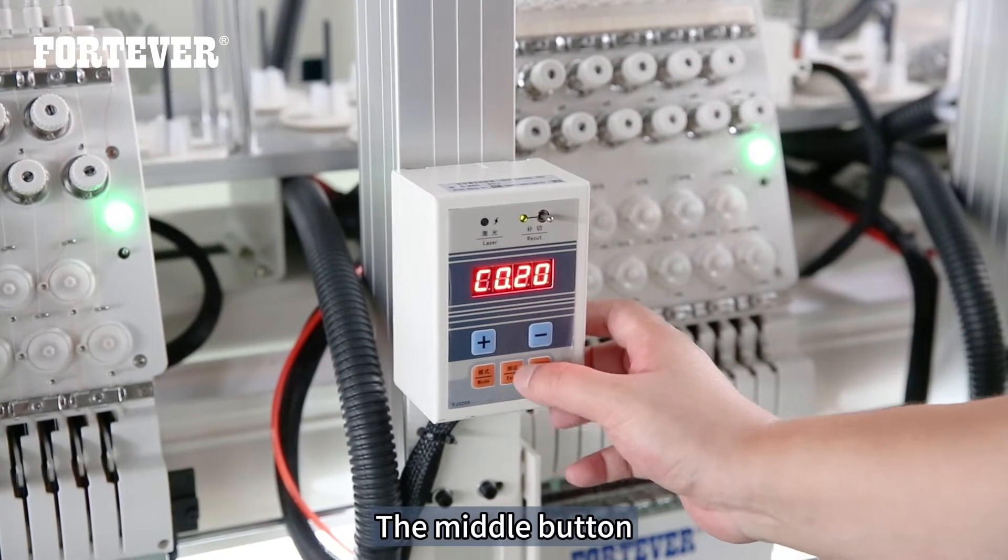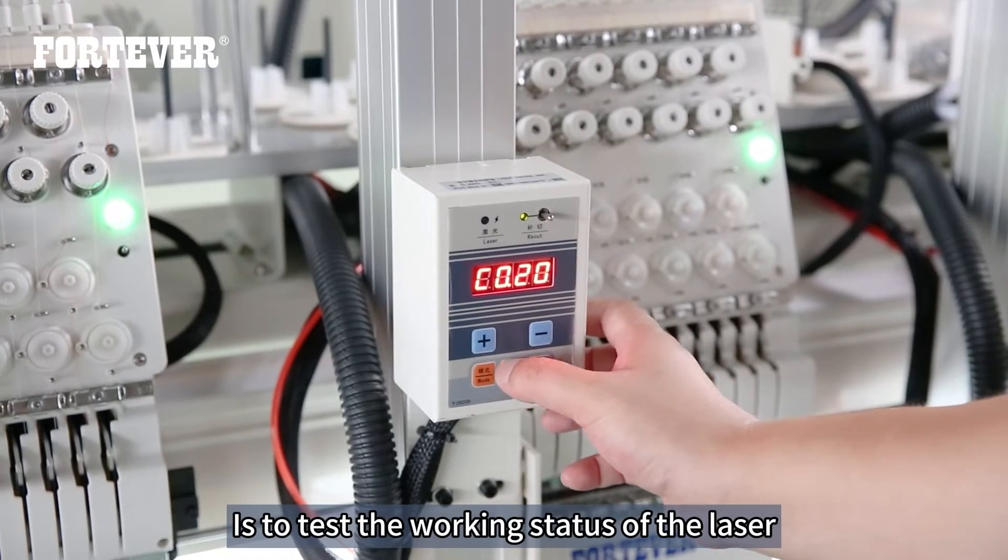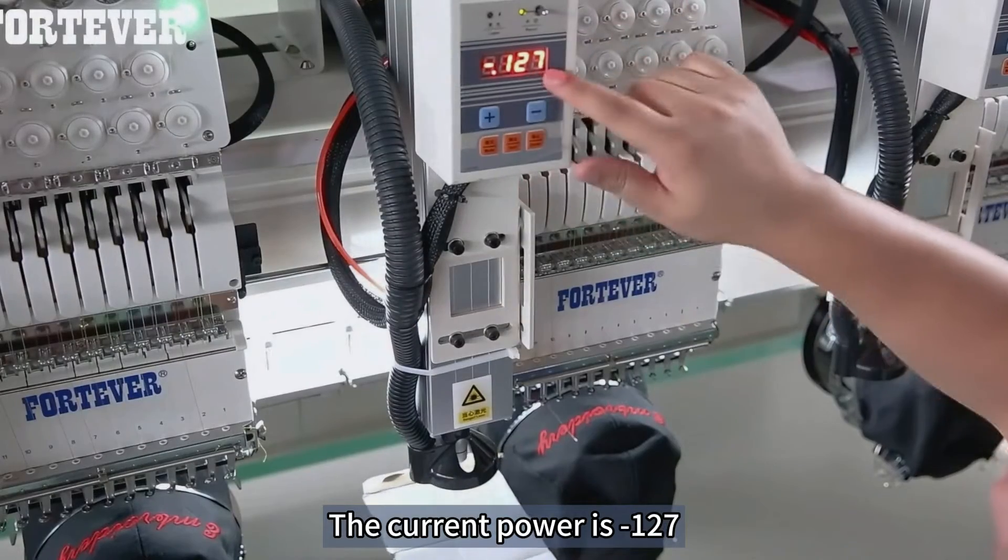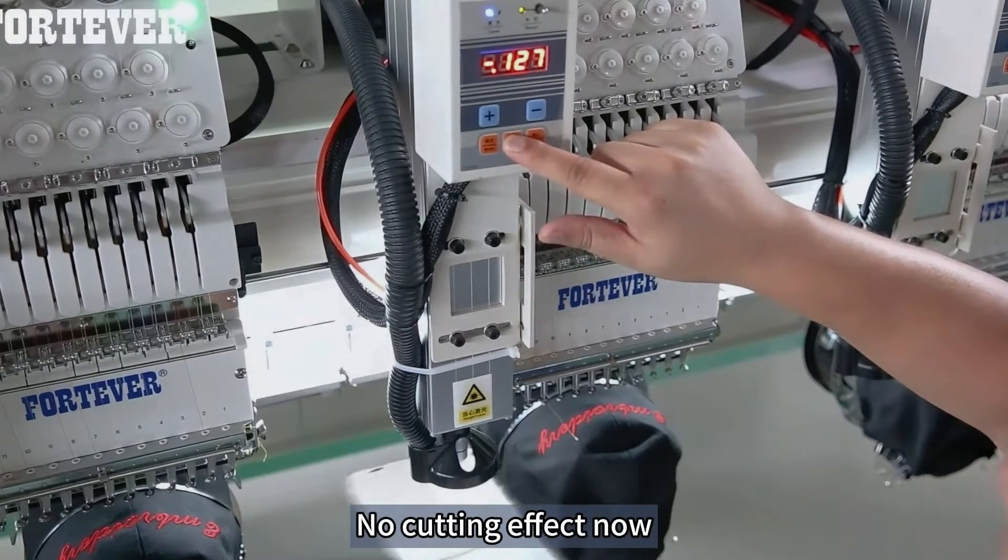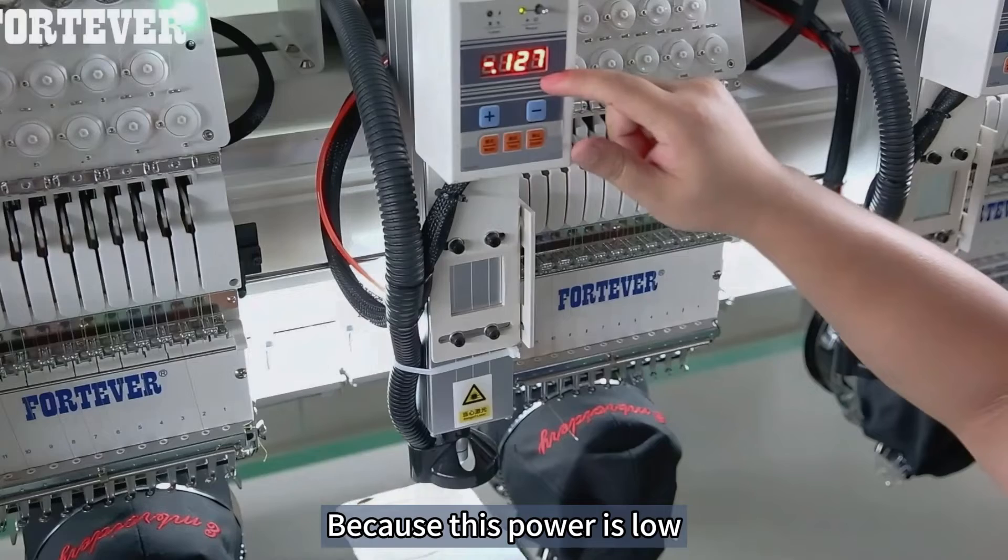The middle button is to test the working status of the laser. The current power is minus 127. Press the test button. No cutting effect now because this power is low.